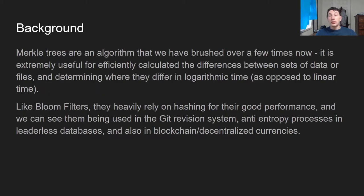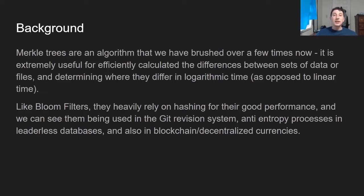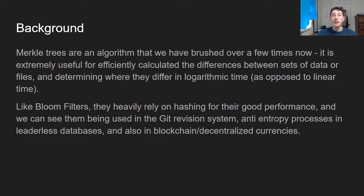So Merkle Trees — what are they? Merkle Trees are really just an algorithm that easily allows you to compute basically a set of differences over two similar sets of records. They do this really quickly and efficiently using something known as a hash tree. This is really useful for things like a Git version control system, an anti-entropy process in a leaderless database like Cassandra or DynamoDB, and also in blockchain or decentralized currencies. Basically, anytime you need to calculate the difference between two things and attempt to rectify them by sending changes over a network, a Merkle Tree is extremely useful for calculating the smallest unit of difference between two sets of records.